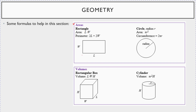When you have a rectangle, the area is length times width, and the perimeter — the distance you would walk around the rectangle — is two times the length plus two times the width. For a circle with radius r, the area is pi times r squared. The circumference — think of it as the perimeter of the circle — is equal to two times pi times r.